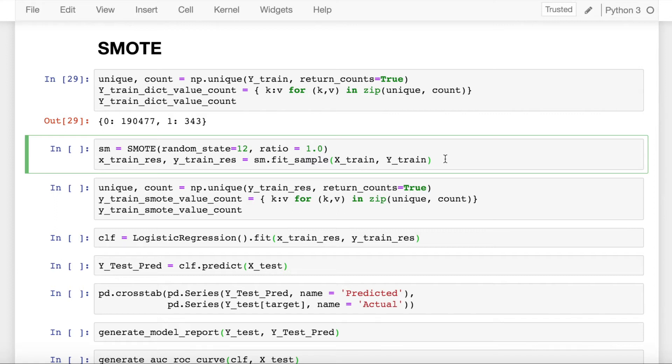Once we have done that, we'll also have to pass in some parameters. I pass in random state and ratio wherein I assign ratio to be equal to 1. The significance of assigning ratio to be equal to 1 is it equates or it creates samples so that my minority class samples are equal to the majority class samples.